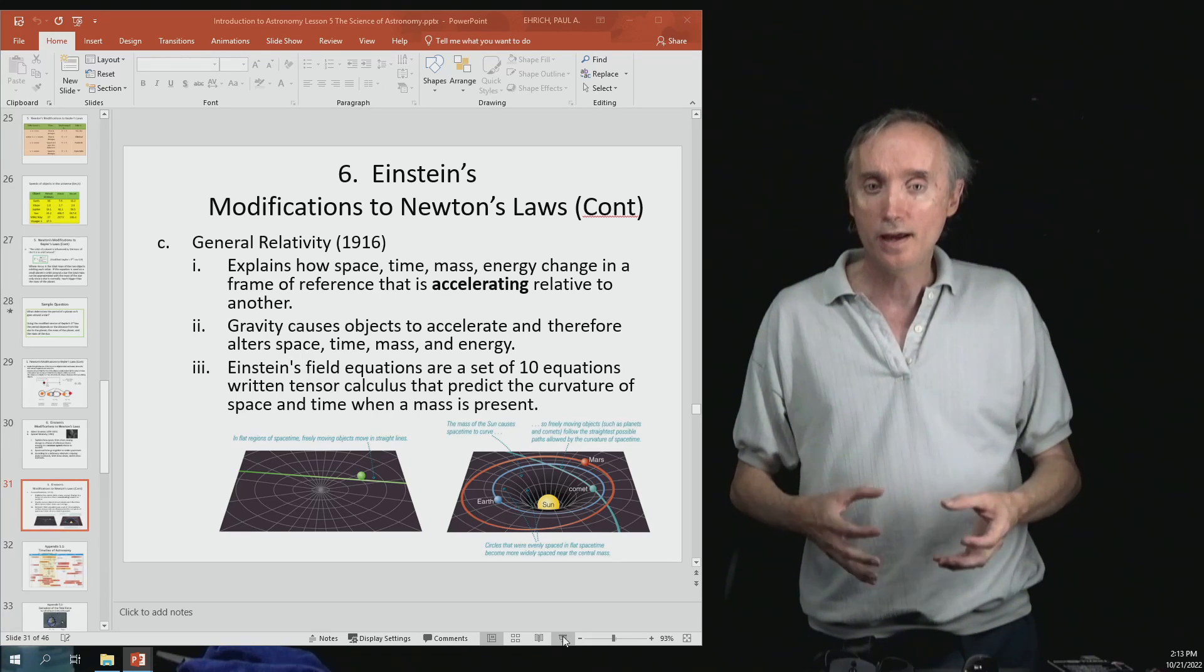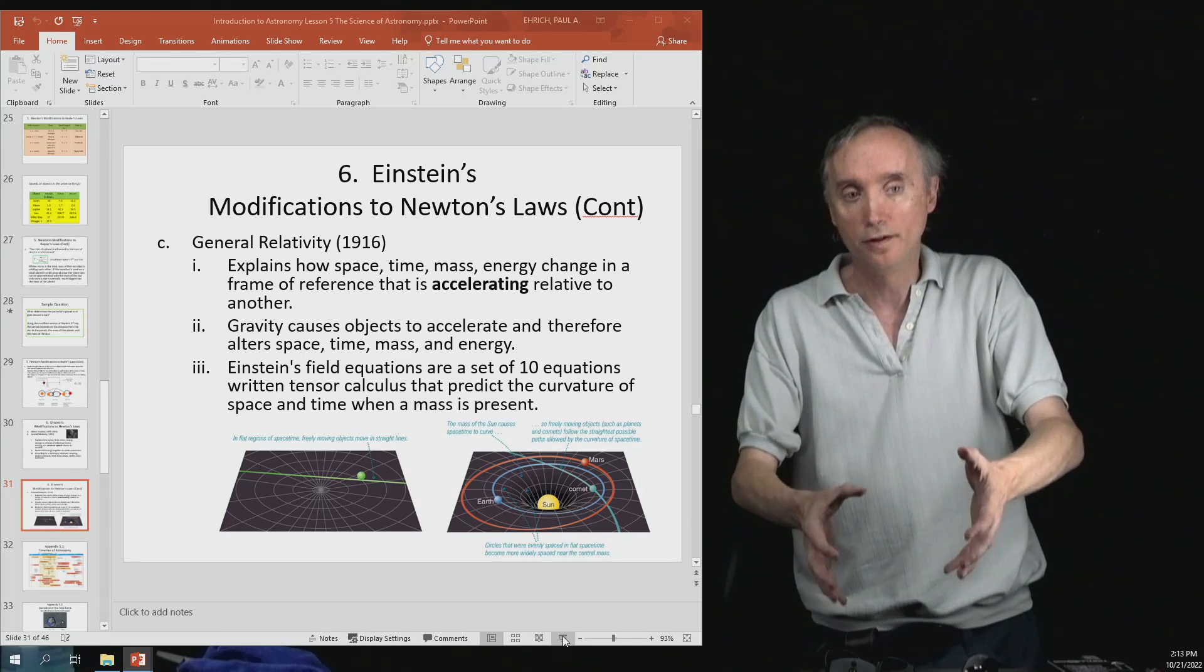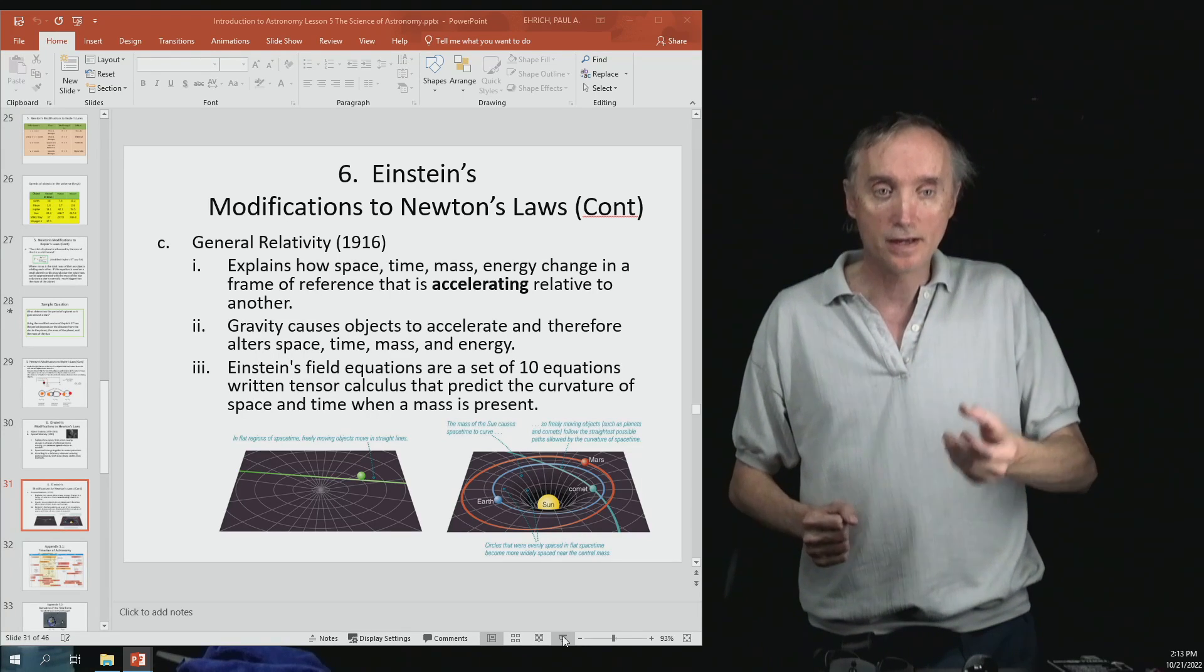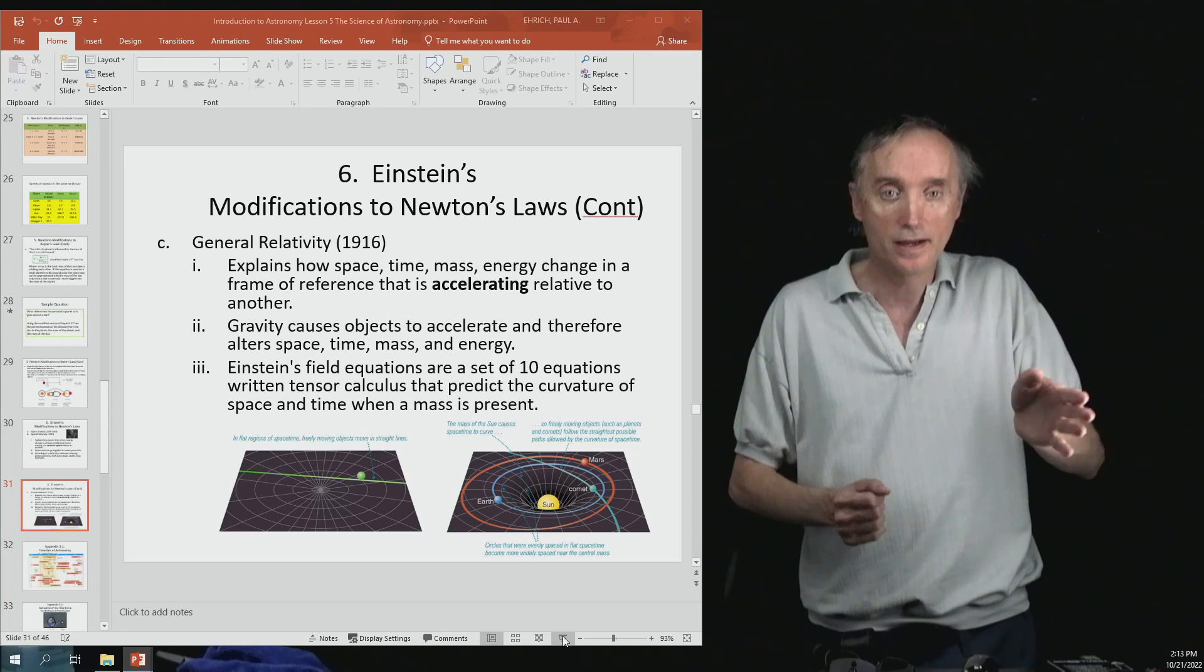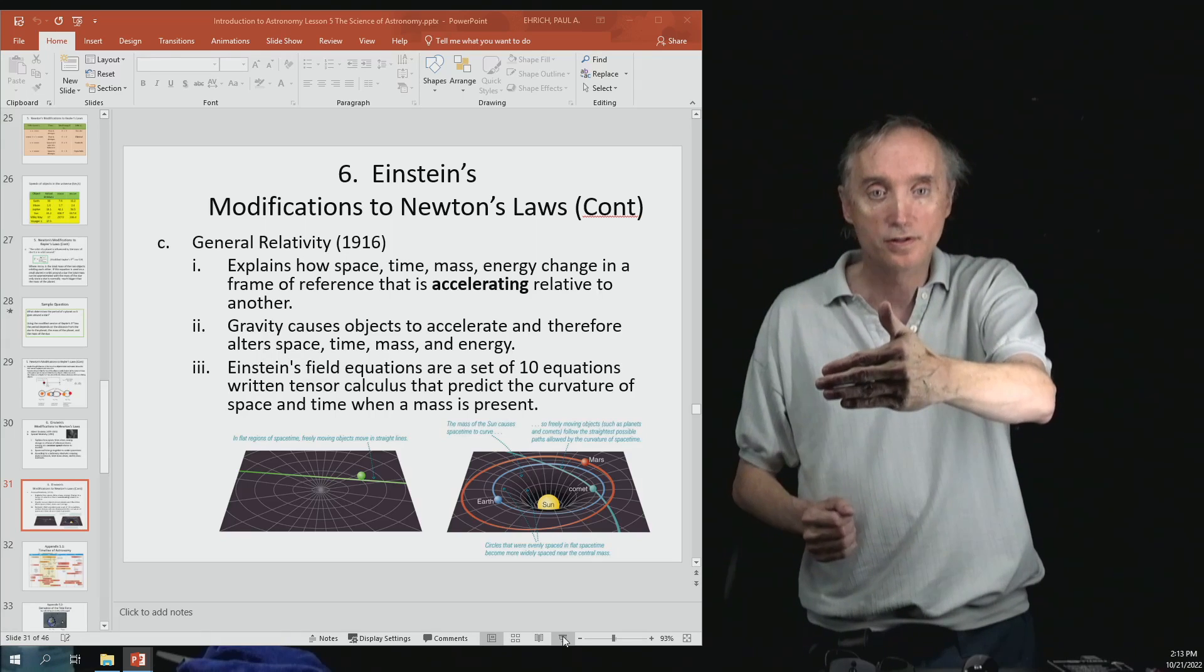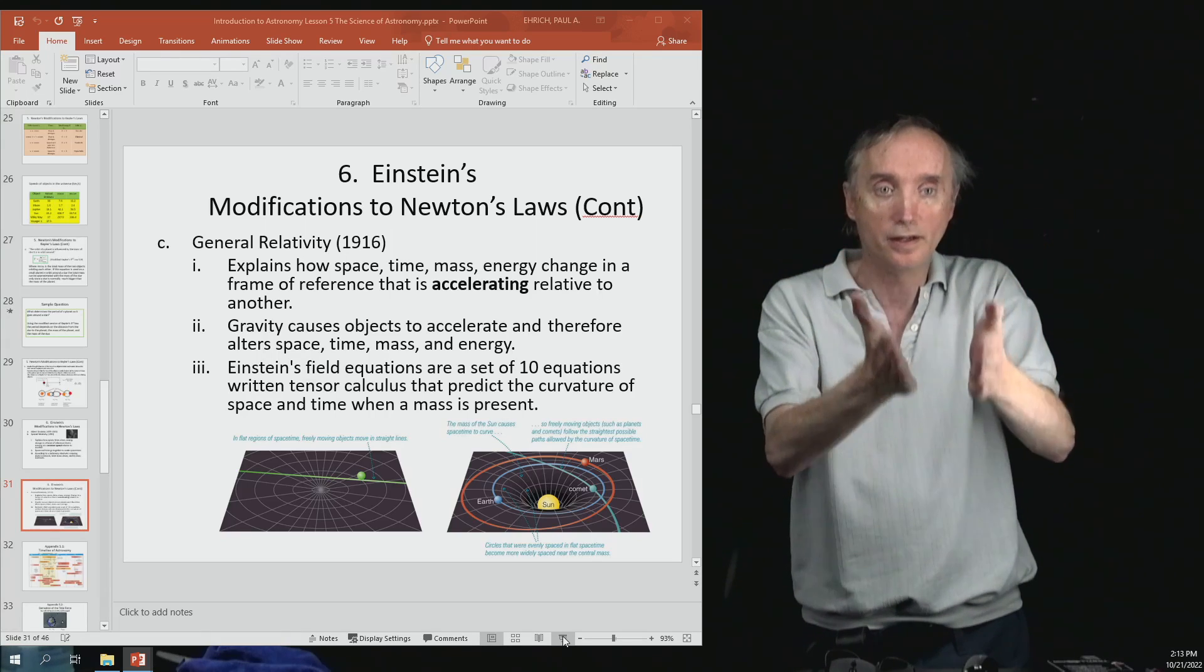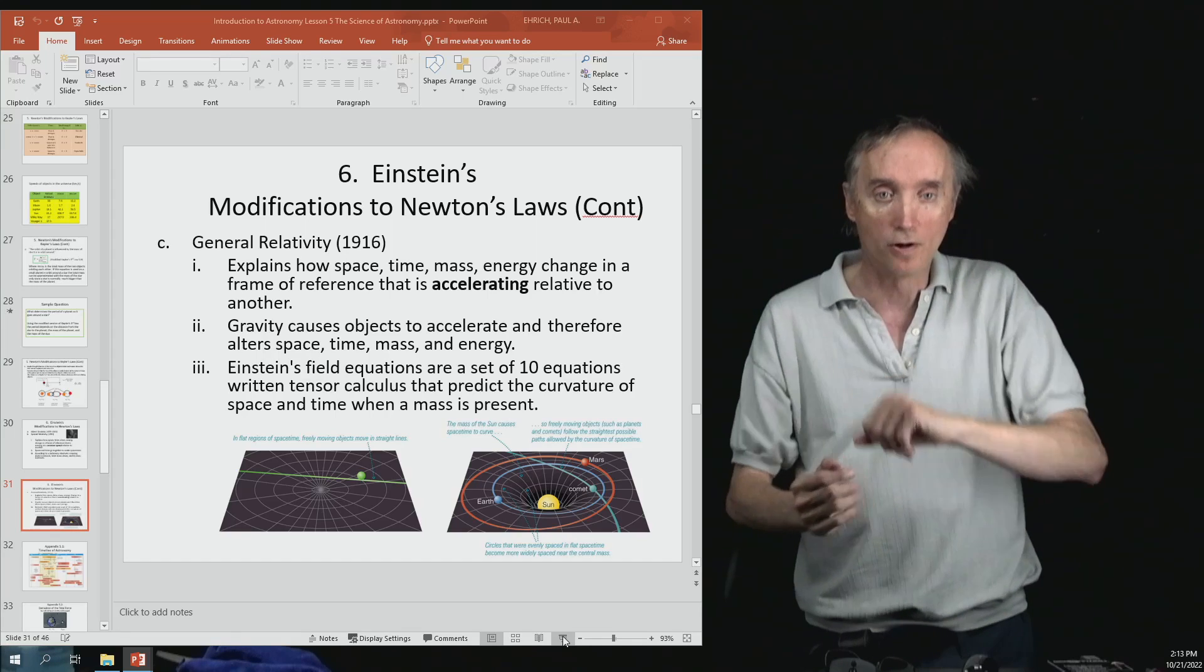But now take a bowling ball and put it in the middle of your bed, and then take that same tennis ball and roll it. You'll notice that it tends to curve. The tennis ball is going to curve because it's feeling the curvature of the bed caused by that bowling ball there in the middle.